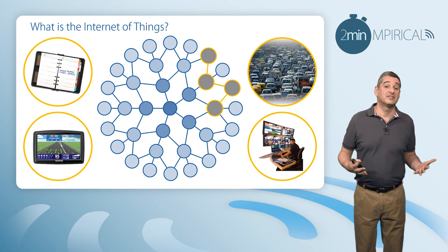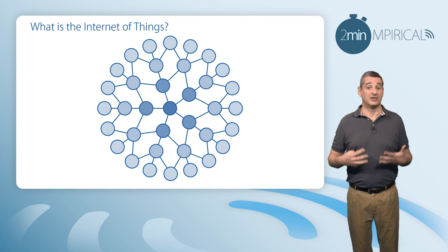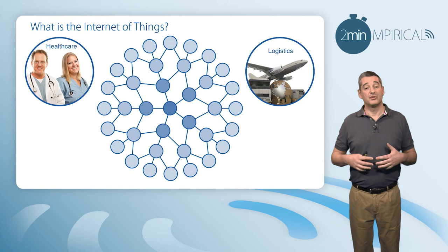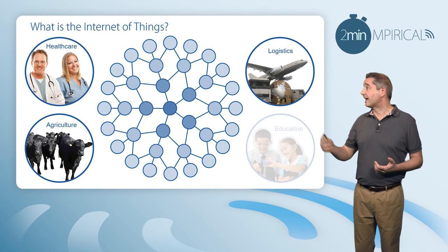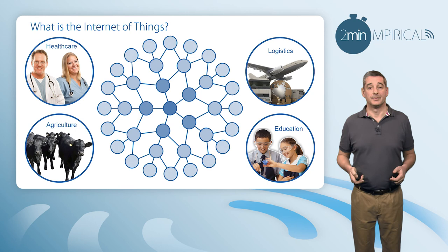So where will we see the Internet of Things? We can see it in a whole host of different locations and environments. The breadth and scope is endless, but some key areas people are talking about today include healthcare, logistics, agriculture, and education. So in summary, what is the Internet of Things?